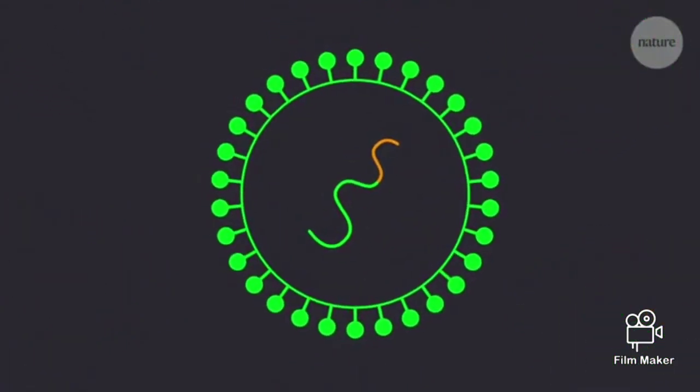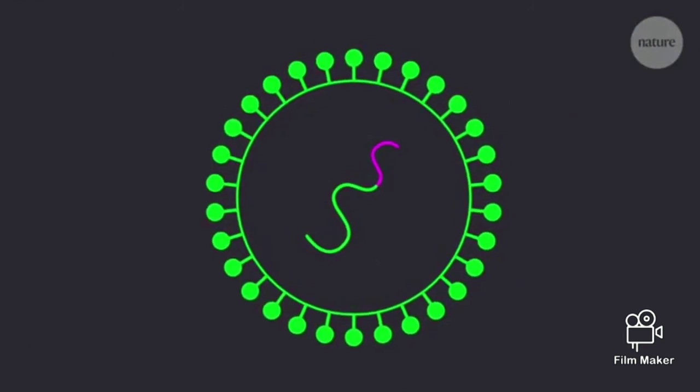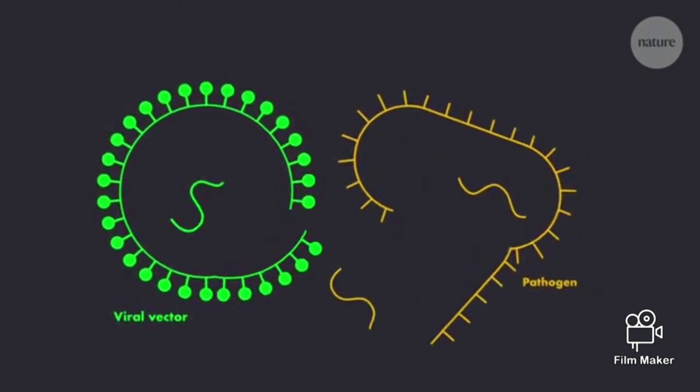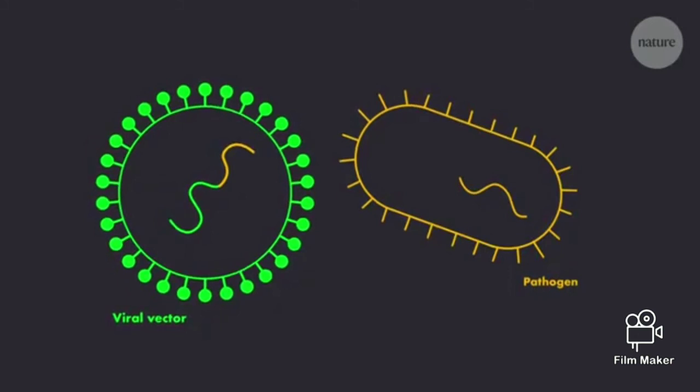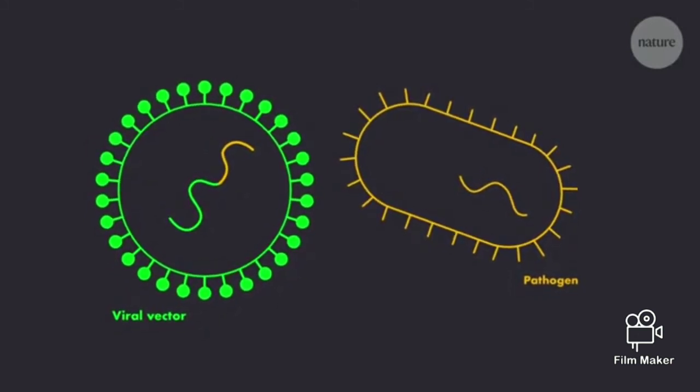Viral vector vaccines are also quick to produce - safe vectors have already been established, and it is relatively easy to insert different target genetic material into these established carriers. And as the genetic material inserted is incomplete, they can't replicate and cause disease, so they're also very safe. But there is only so much the process can be sped along.